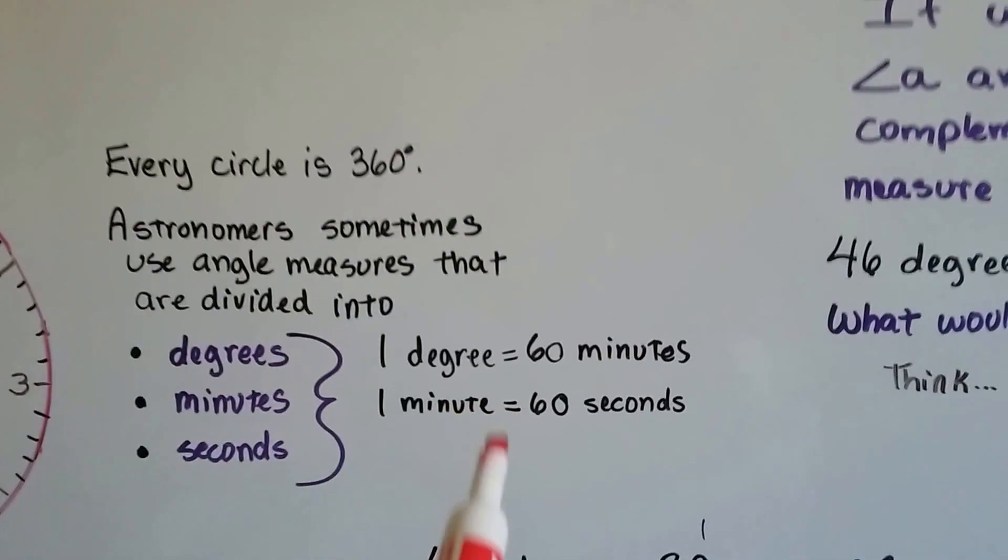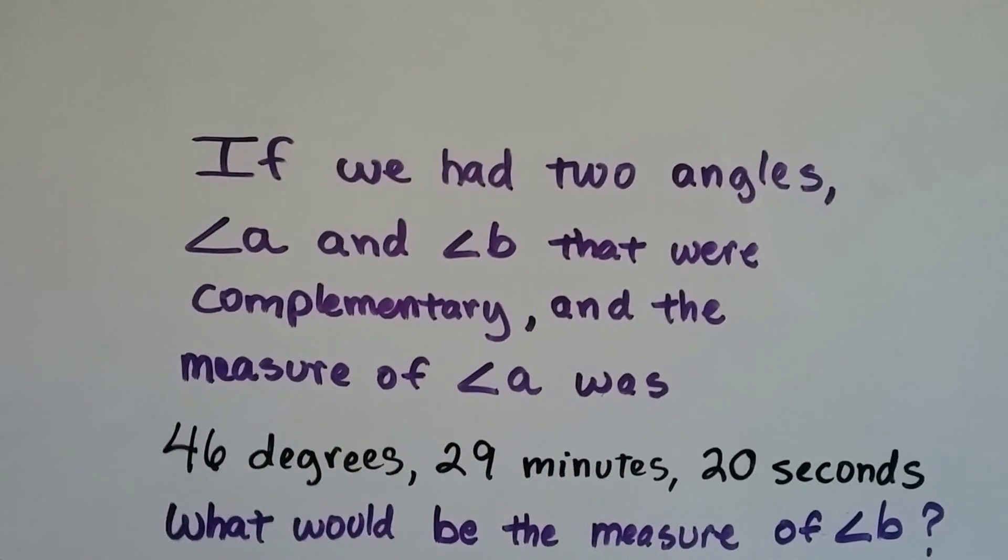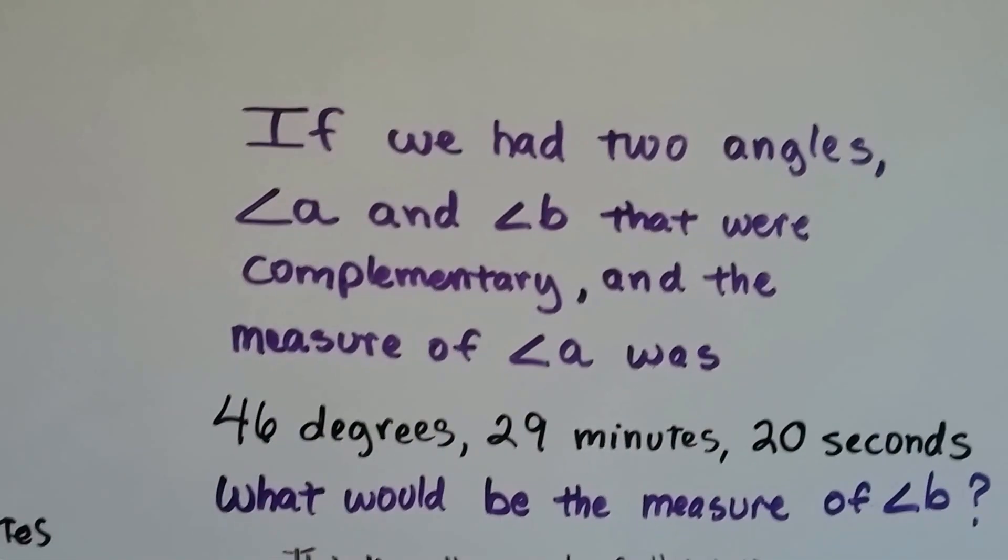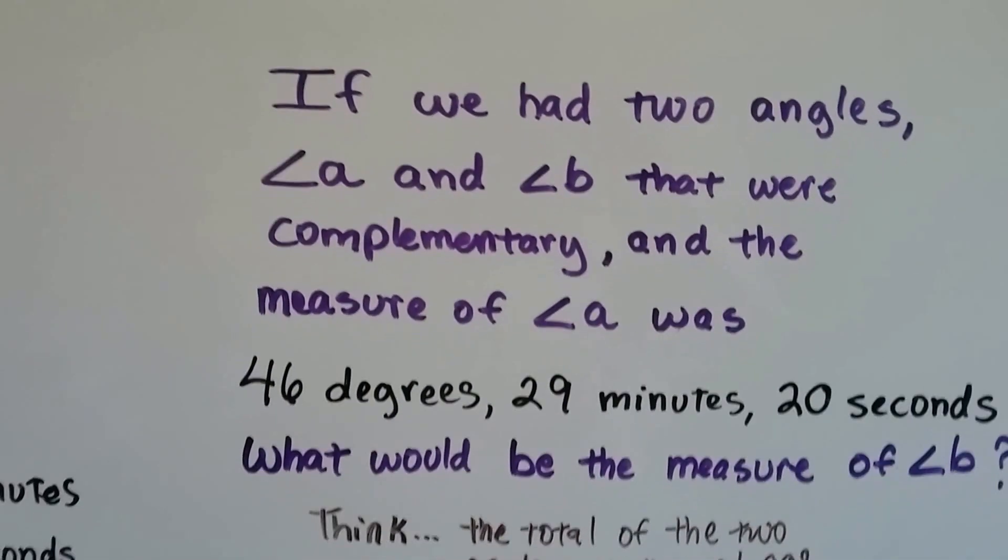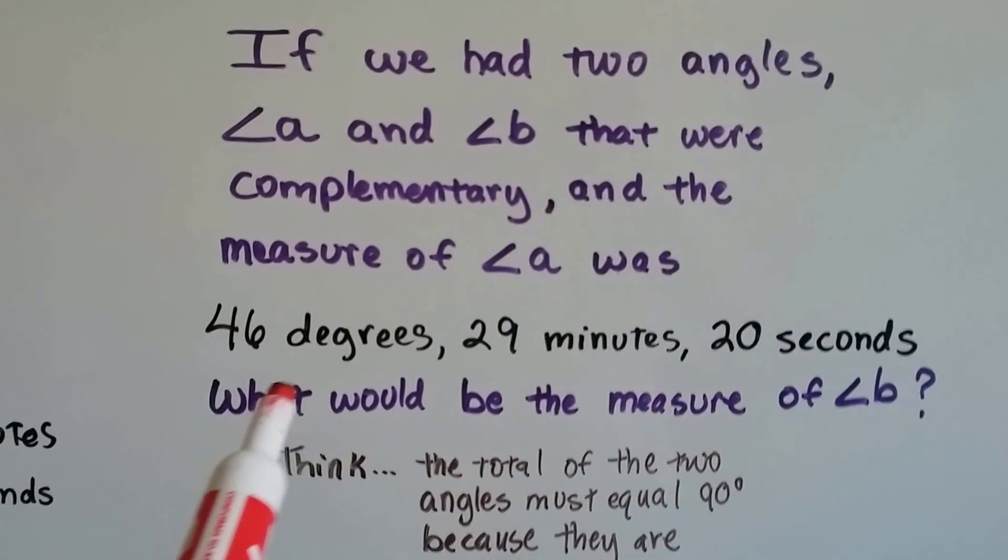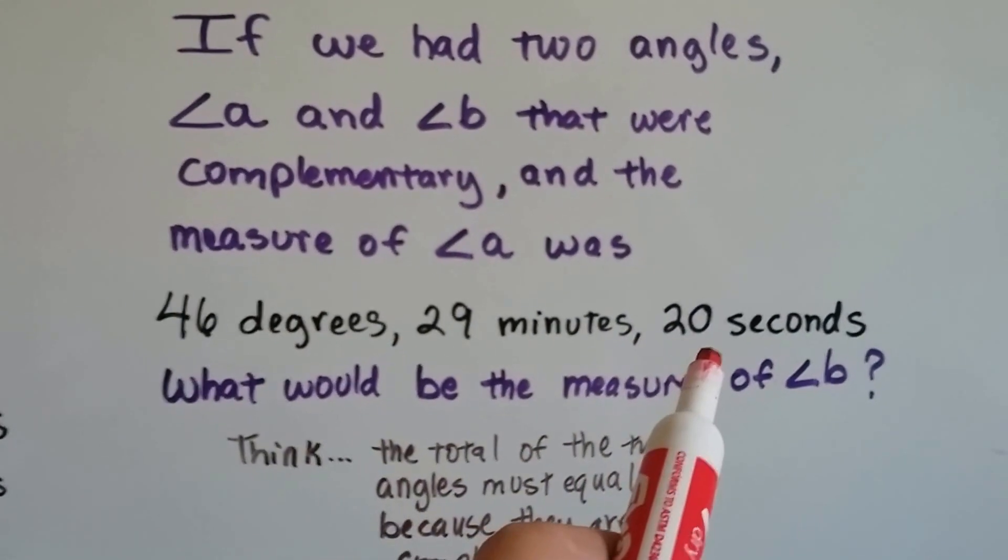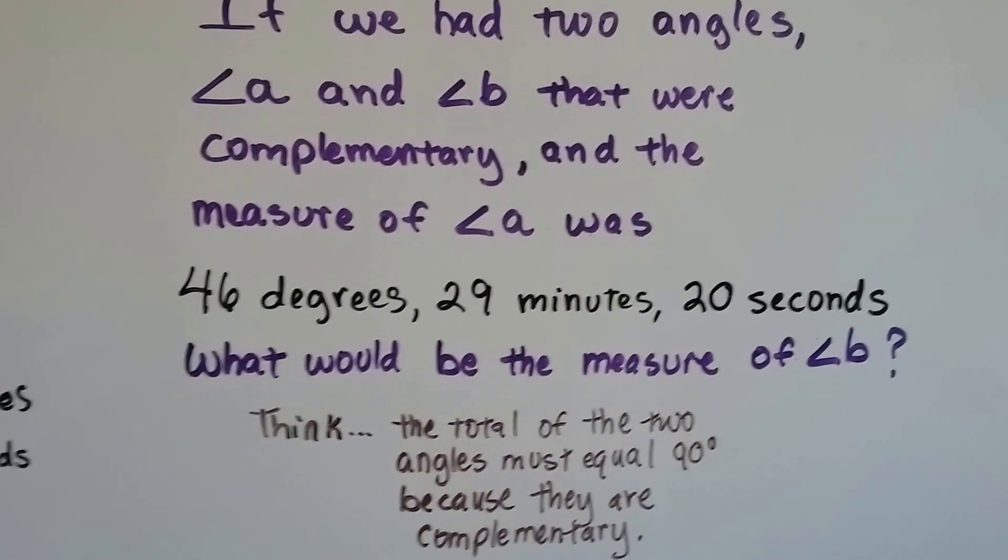So knowing this, if we had two angles, angle A and angle B, that were complementary, and the measure of angle A was 46 degrees, 29 minutes, and 20 seconds, what would be the measure of angle B?